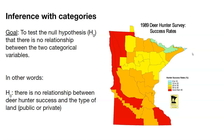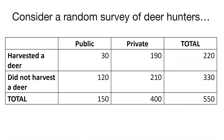Our goal here might be to test the null hypothesis that there's no relationship between two categorical variables — whether or not a deer hunter harvested a deer, and the type of land they hunted on. Minnesota has a lot of public land but also a lot of private land, so does the type of land affect deer hunter success? Here's some data gathered from a random survey of deer hunters. In total, 220 deer hunters harvested a deer: 190 of those were on private land and just 30 were on public land. This is a random survey of 550 total deer hunters, giving us a two-way table we can begin to do inference on.